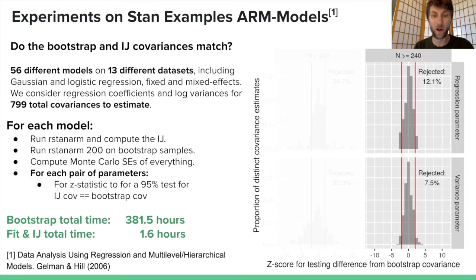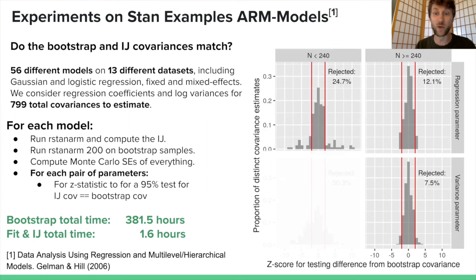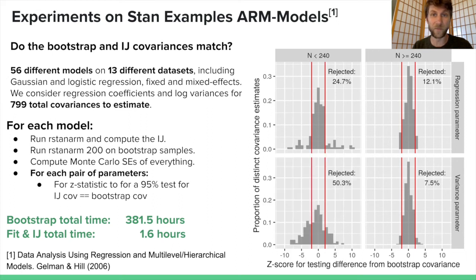For smaller data sets, we do less well. There are a bunch of outliers in the regression parameters, and the variance parameters similarly. The IJ and the bootstrap don't match perfectly.